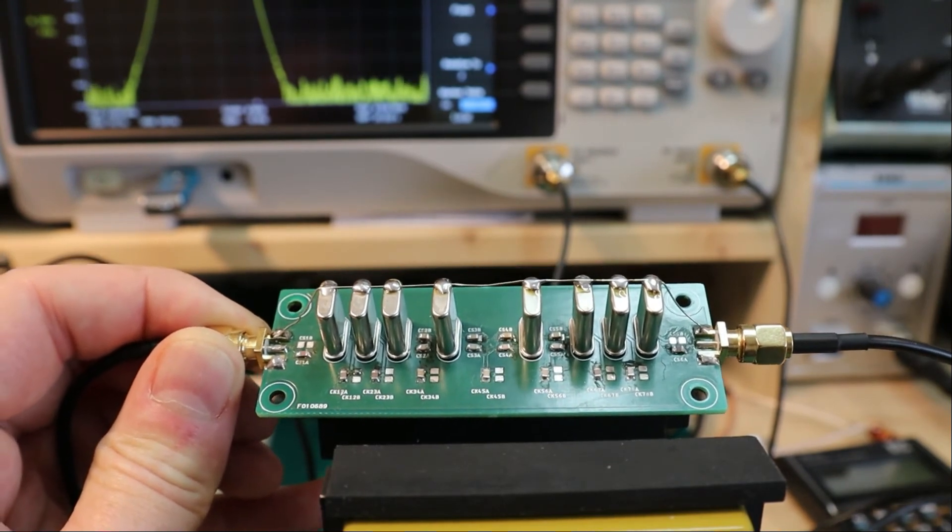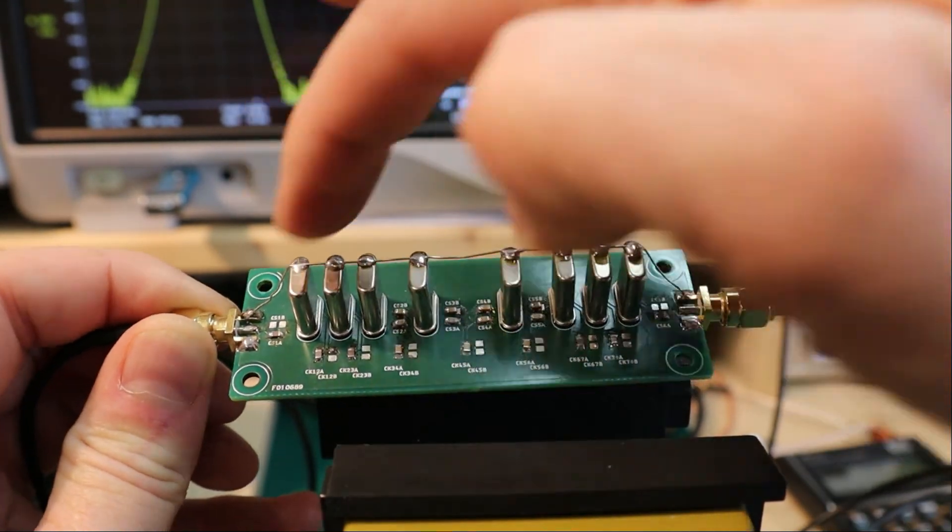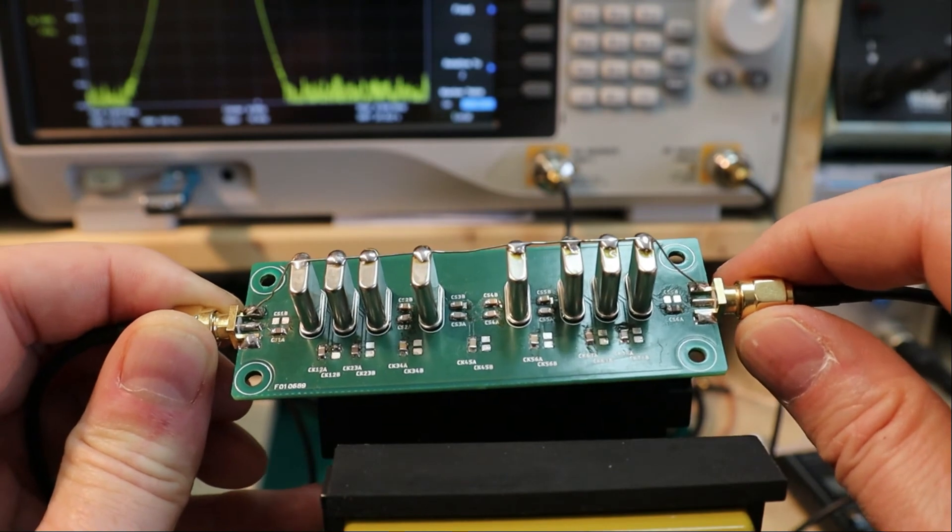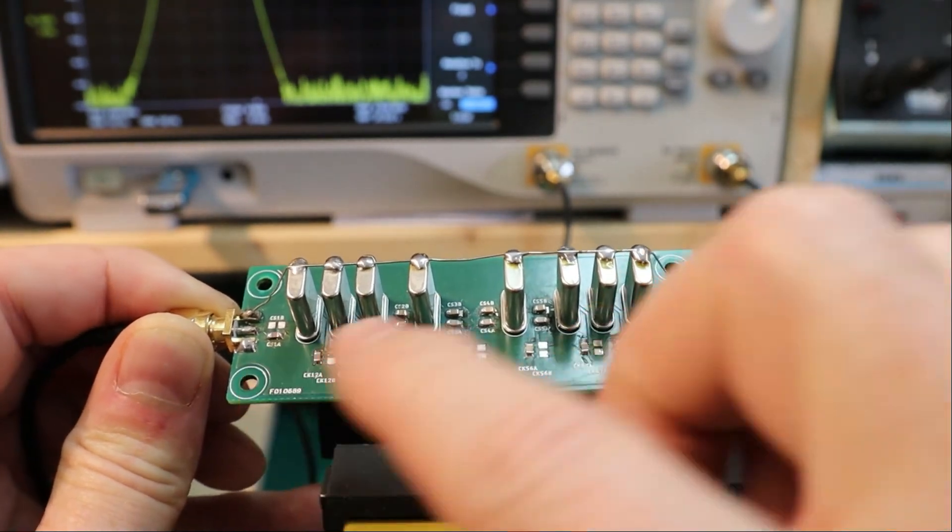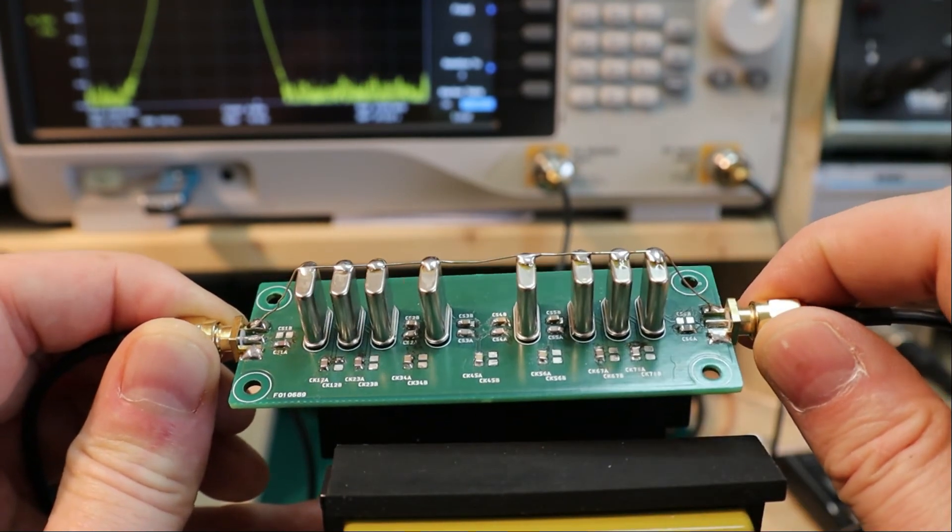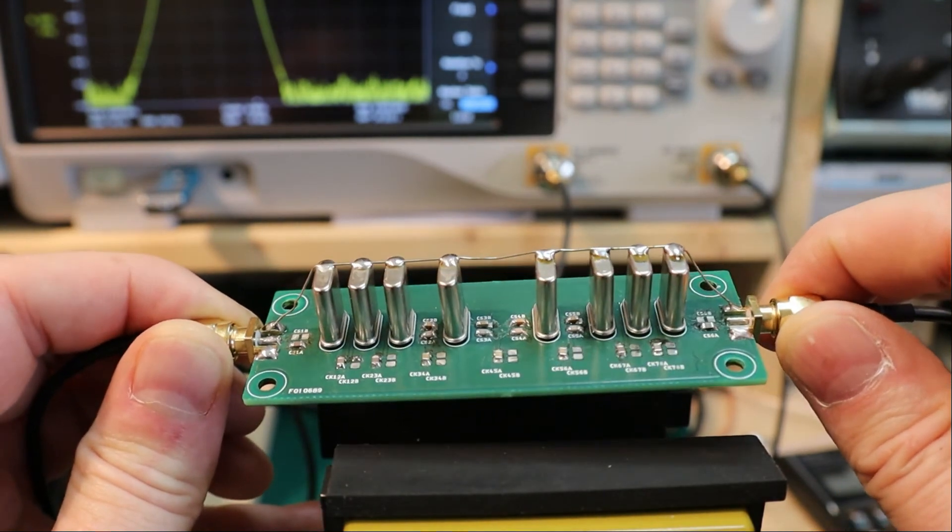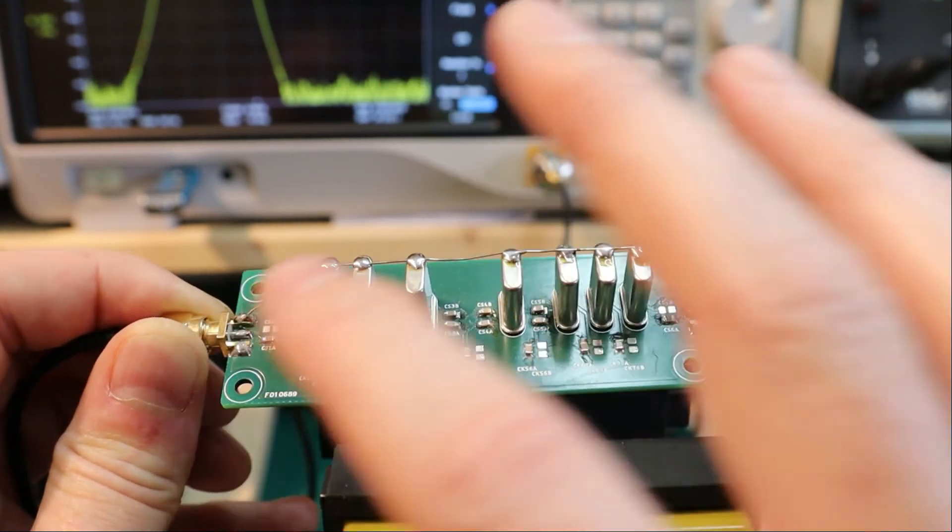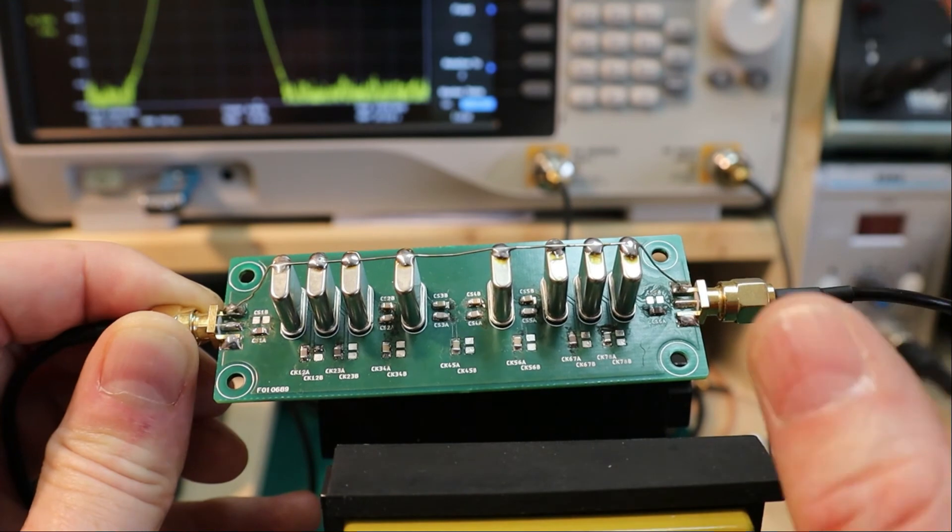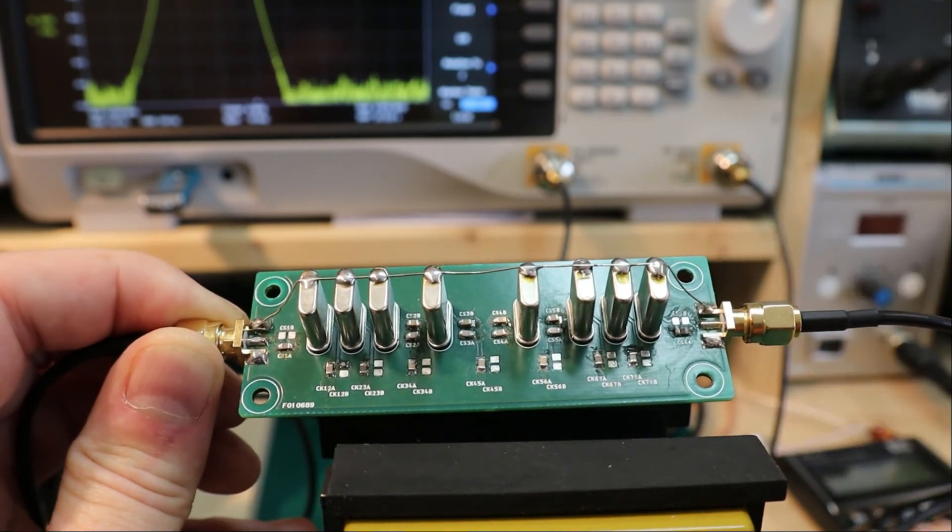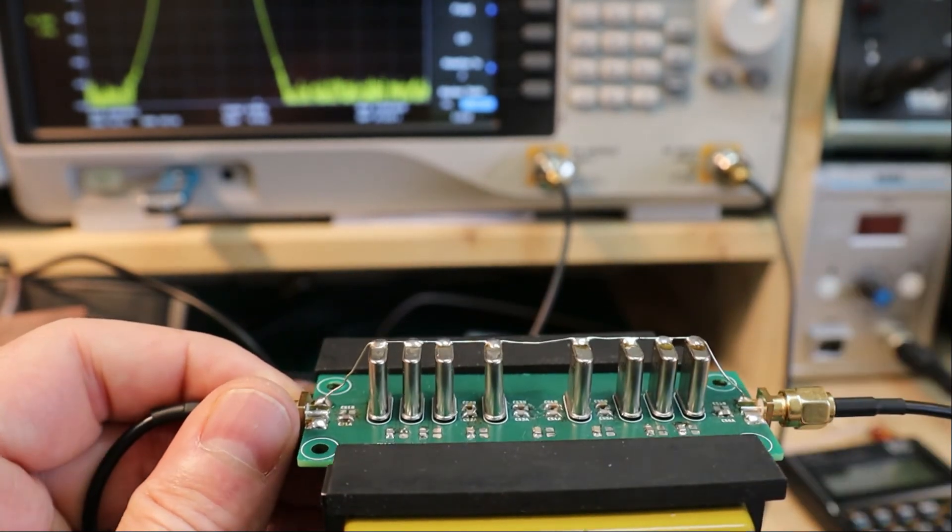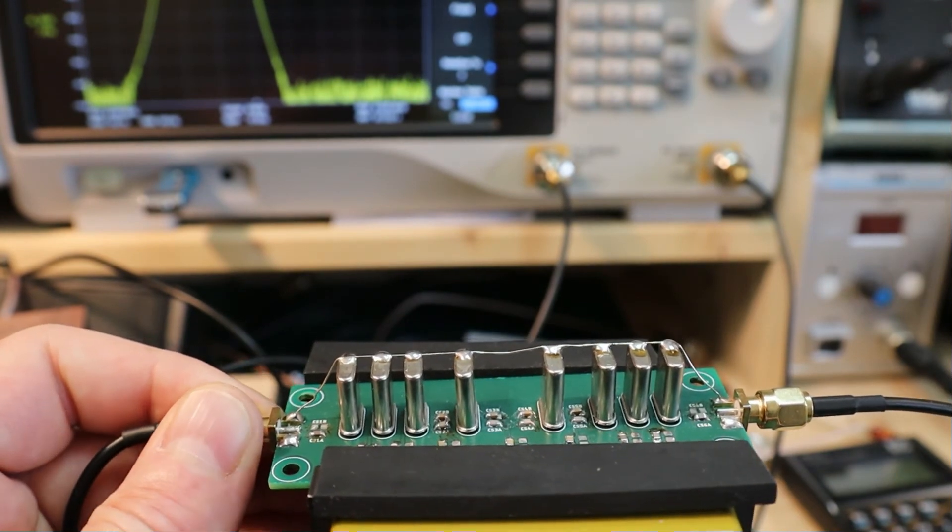This is the eight-pole crystal ladder filter. You see the eight crystals, all the SMD coupling capacitors, and I allowed room for tweaking and tuning capacitors in parallel so I could play around a bit. There's no matching at the input or output, so the input and output impedance is roughly around 100, 120, 140 ohms, something like that. I hooked it up to the spectrum analyzer.